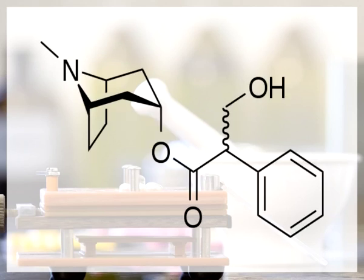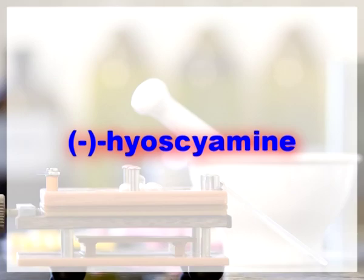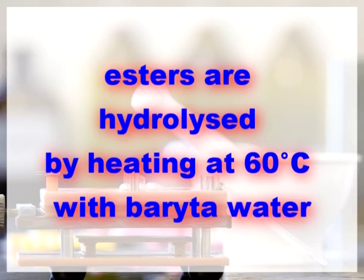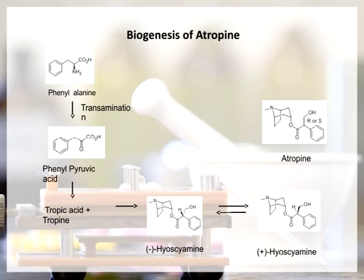Biogenesis of atropine: Atropine belongs to the tropane alkaloid group. The principal alkaloids of medicinal interest in this group are hyoscyamine — whose more stable racemate is atropine — and hyoscine (scopolamine). These compounds are esters hydrolyzed by heating at 60°C with barium water. Atropine yields tropic acid and tropine; hyoscine gives tropic acid and oscine. Phenylalanine is the precursor of tropic acid. Phenylalanine after transamination converts into phenylpyruvic acid, which converts into tropic acid; tropic acid and tropine form levo-hyoscyamine. Levo-hyoscyamine converts into dextro-hyoscyamine and the racemate is atropine.